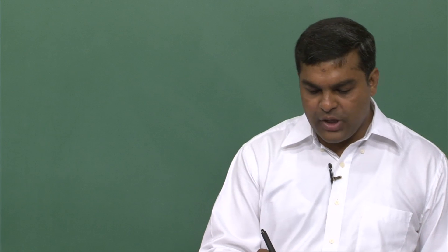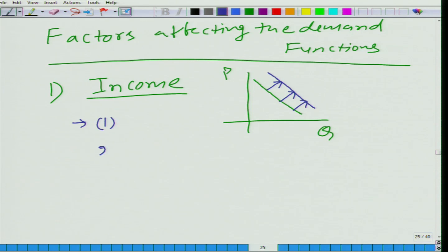Let me say there are two kinds of goods: normal goods and inferior goods. When quantity demanded rises with an increase in income, then we call that good as normal good.